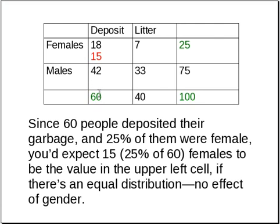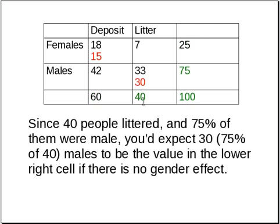Since 60 people deposited their garbage — that's the total for this column — and 25% of them were female, you'd expect by pure chance 15, or 25% of 60, females to be in the upper left cell. Similarly, because 40 people did litter and 75% of them were male, you'd expect 30 — 75% of 40 — to be the value in the lower right cell, if there's no gender effect.